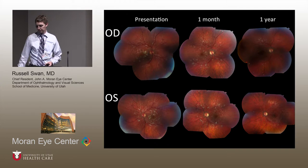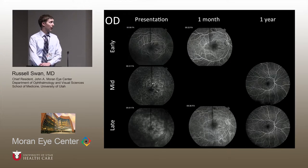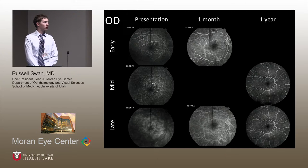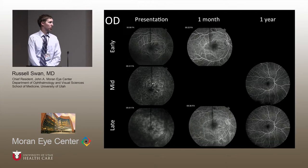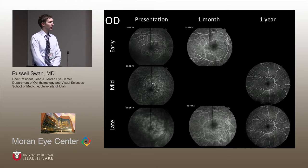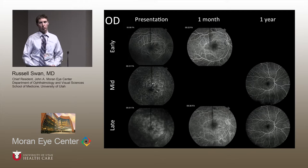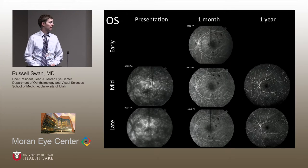In terms of the fluorescein angiogram of the right eye at various time points, from presentation to one month, there is dramatic improvement in the bilateral diffuse choriopathy and the pinpoint hyperfluorescent areas, which are basically completely resolved at one month. There is also a decrease in the retinal vascular staining, with some peripheral staining still present at one month, but dramatically improved. At one year, she has a completely normal fluorescein angiogram. The left eye shows very similar findings.